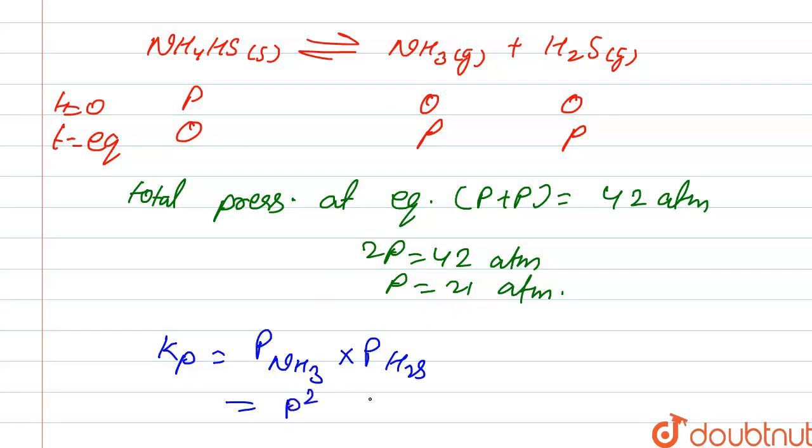the value of P is 21, that is 21 square, which is 441 atm square.